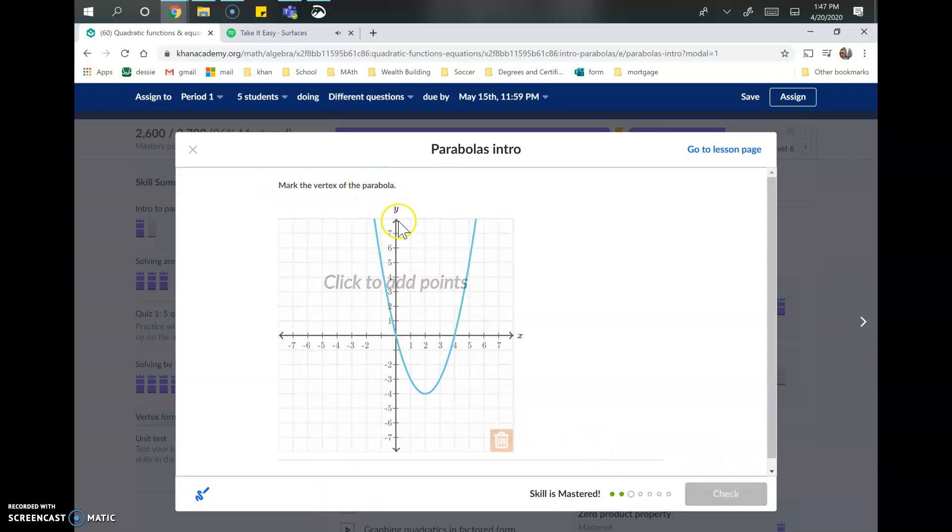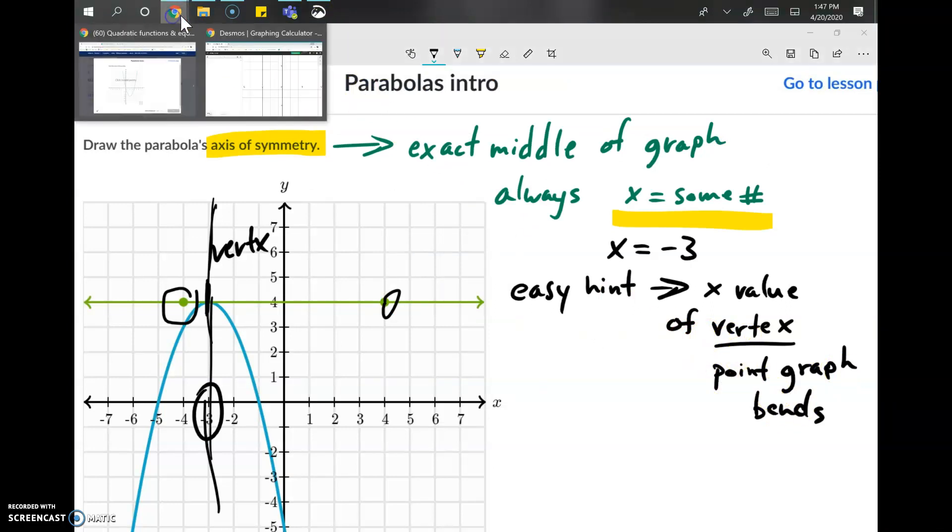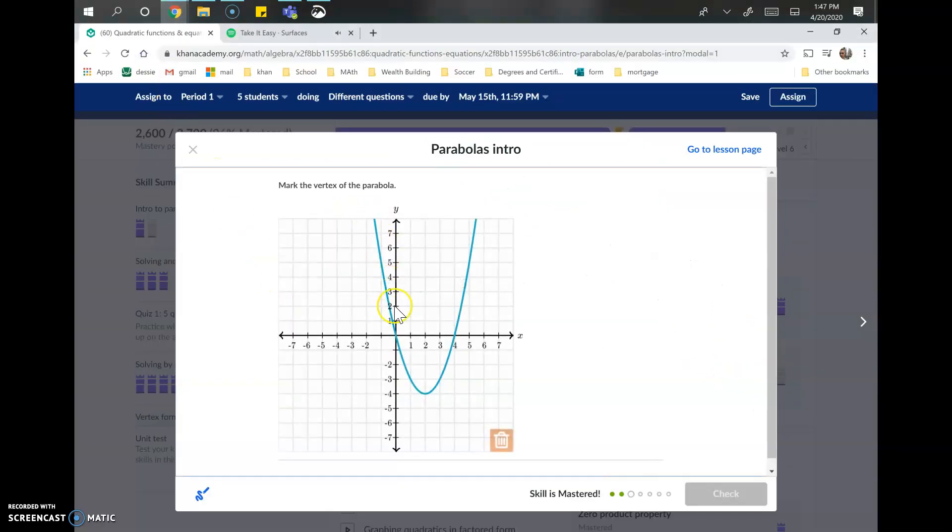This question asks us to mark the vertex. As we discussed in the previous example, the vertex is the point where the graph bends. When we look at this parabola, it bends right exactly where the vertex is: 2 for x and negative 4 for y. We're just going to dot that point right there.